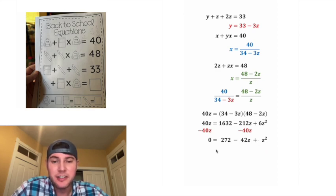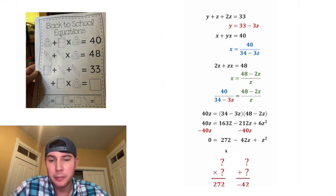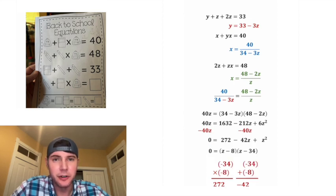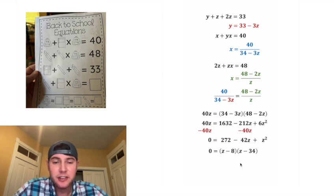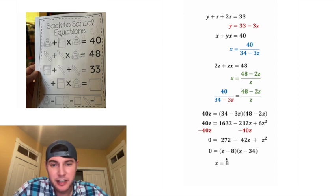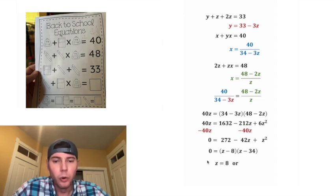Now this is set equal to 0, and we can solve by factoring. We need two numbers that add to negative 42 and multiply to 272 — that's negative 8 and negative 34. So we have (z minus 8)(z minus 34) = 0. If z equals 8, that factor is 0, giving us 0. Or if z equals 34, that factor is 0, also giving us 0. So z equals 8 or z equals 34.